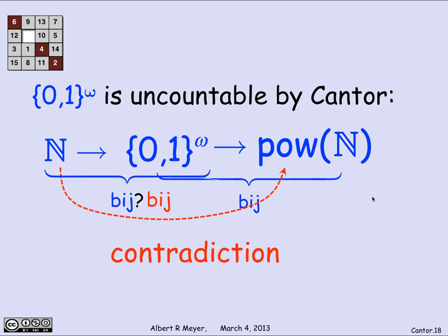Cantor's theorem implies there's no surjection from the non-negative integers to {0,1}^ω, and therefore there are an uncountable number of infinite binary sequences.